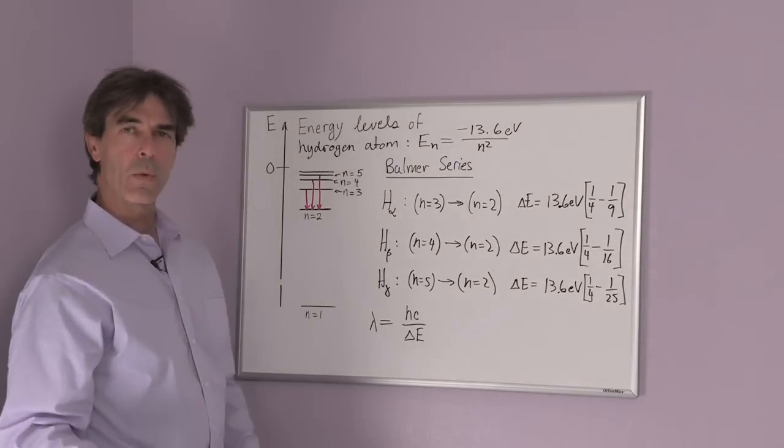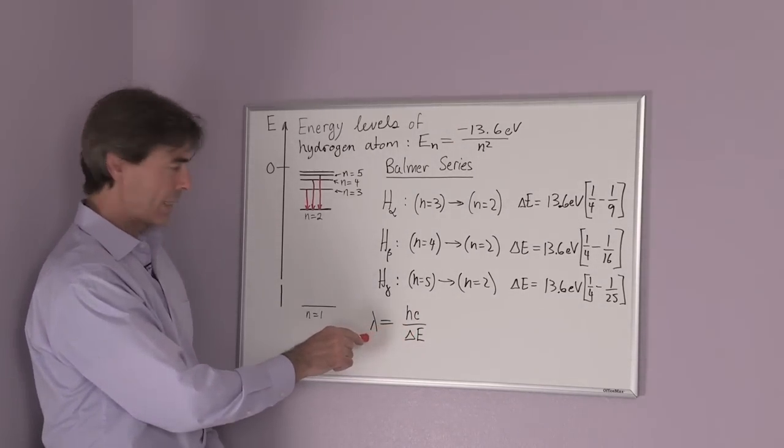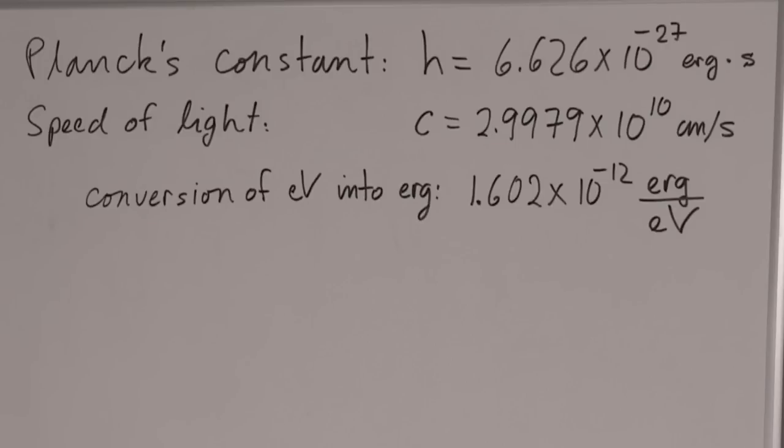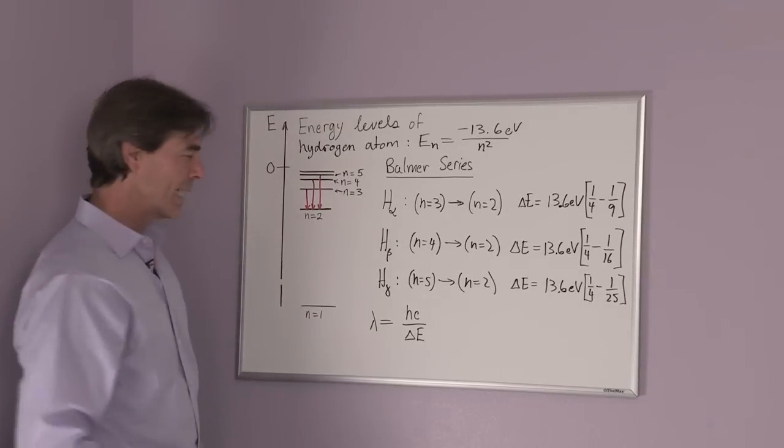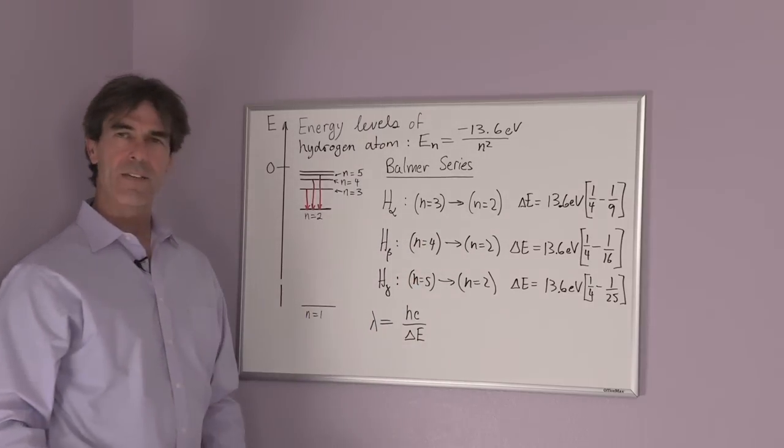These numbers we can work out. Once we know the energy difference, we calculate the wavelength by using Planck's constant h, which is 6.626 times 10 to the minus 26 centimeters, times the speed of light, which is 3 times 10 to the 10 centimeters per second. We have to divide by the energy difference, not in eV, but in Erg.